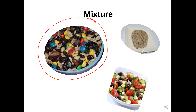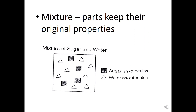With a compound, if you want to separate it you need a chemical reaction to break those bonds. But with a mixture you can separate it with a physical change. For example, I don't like tomatoes, so I pick out the tomatoes from a salad. The parts of a mixture keep their original properties — it's also really easy to separate sugar and water.